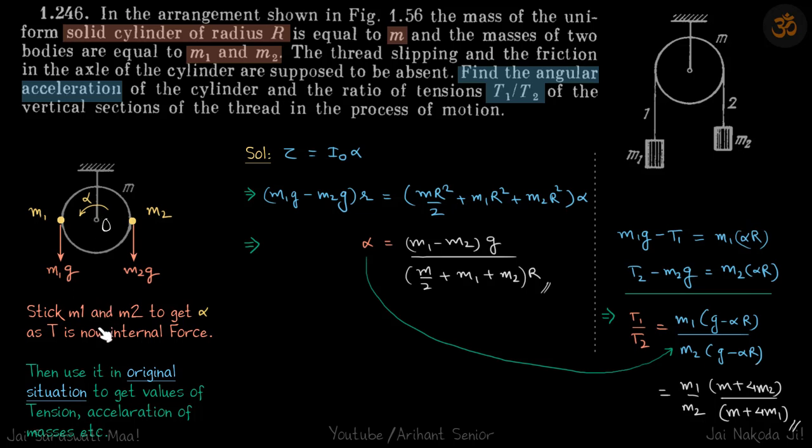Initially, for calculating alpha, let's just stick m1 and m2 to the ends. Now we'll find alpha by torque equals I alpha. Torque will be, assuming alpha on this side, m1g minus m2g into r. I about O will be because of the disc and because of the masses. For the disc it is mr²/2, plus m1r² plus m2r² into alpha. This gives the value of alpha.